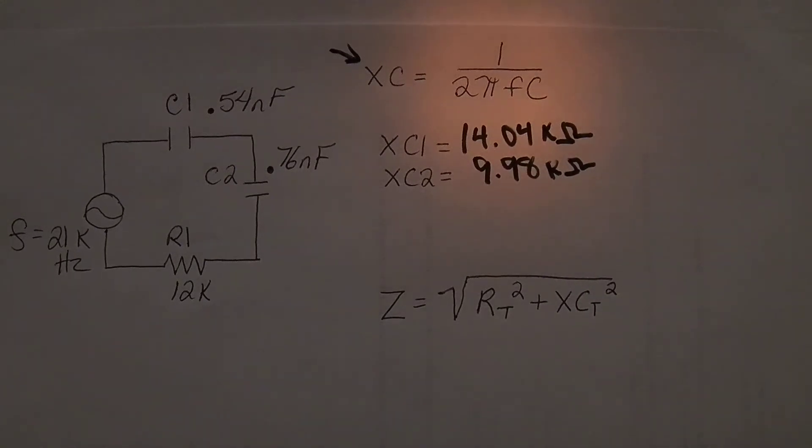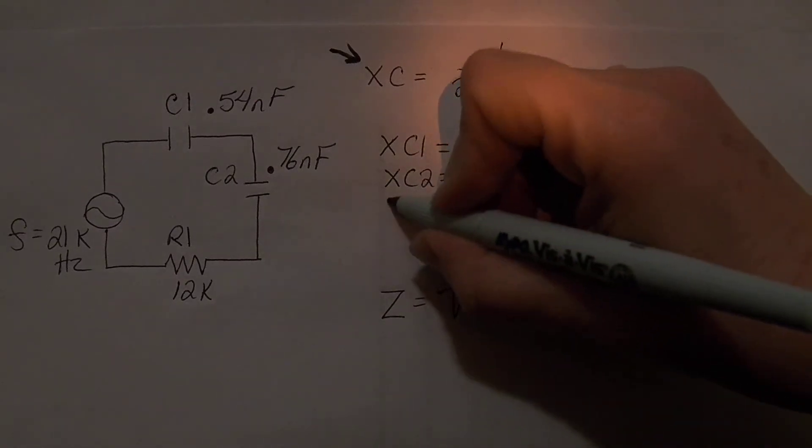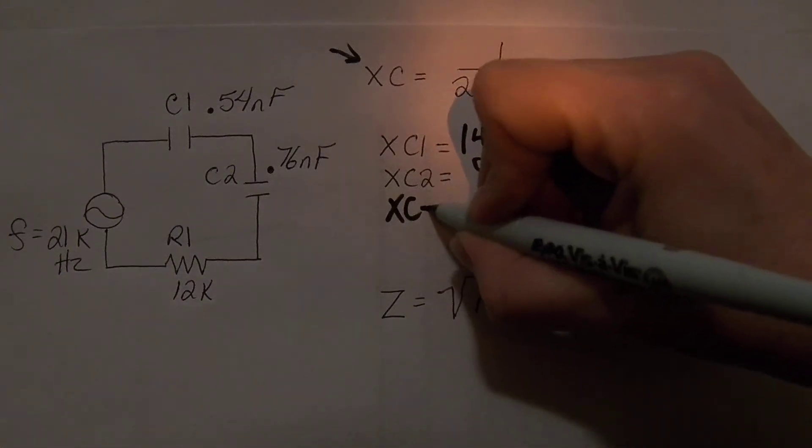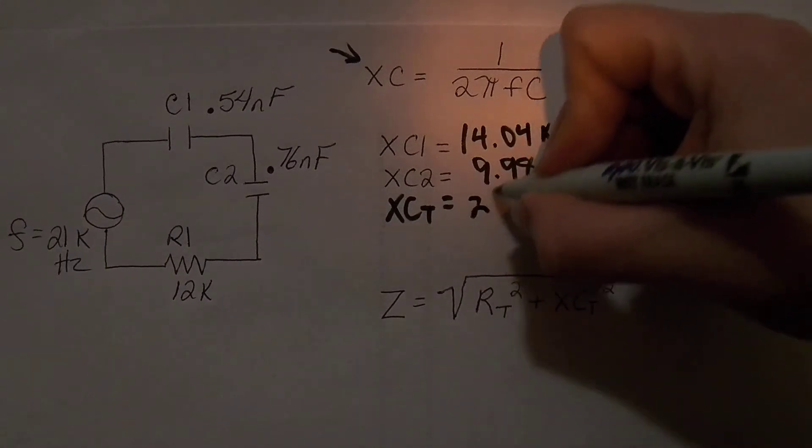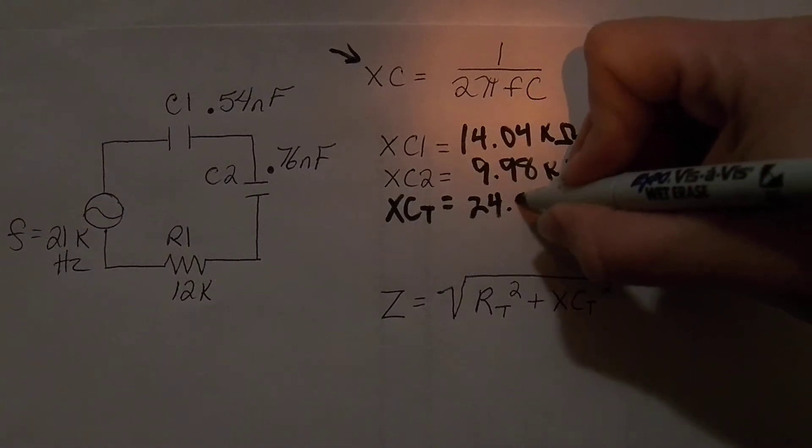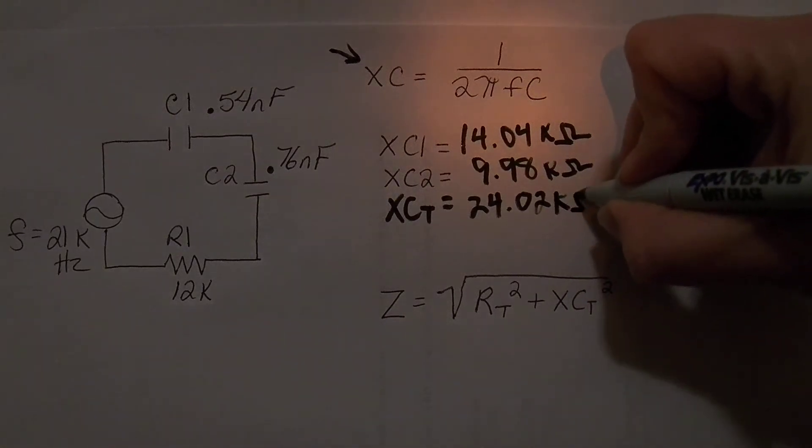So we started with those two. Now we know that we can combine like values when we are in series, which means that I can add XC1 and XC2 to get XCT. So I still have my 9.98K in my calculator. All I have to do is add 14.04K, and I get a total capacitive reactance of 24.02 kilo ohms.